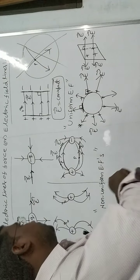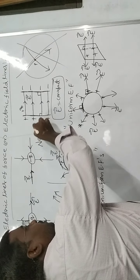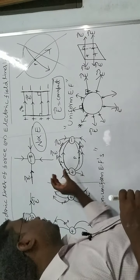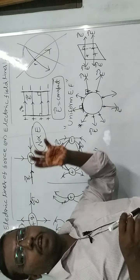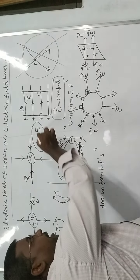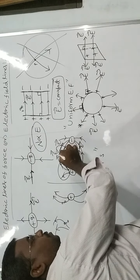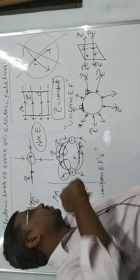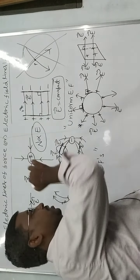The number of electric lines of force is always proportional to the electric field strength. When the number of lines increases at any region, the strength of the electric field is also increased. Near a charge, the density of lines is greater — so the electric field is stronger. At some distance away, the electric lines are more separated from each other, so the number of lines decreases, and correspondingly the electric field strength also decreases.